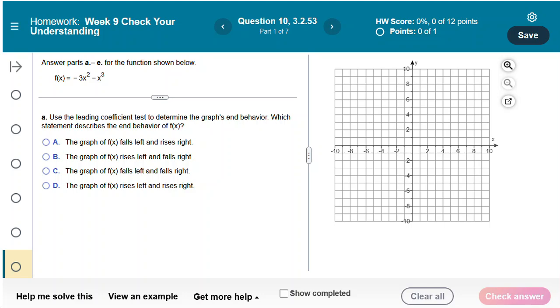In this video we're going to go through an example problem from my lab and use the graphing tool. We're going to start by answering some questions about the graph. The graph that we're looking at is f(x) equals negative 3x squared minus x to the third.